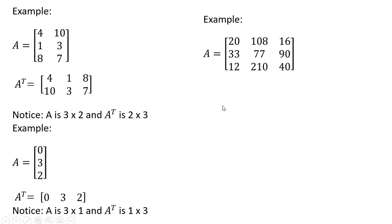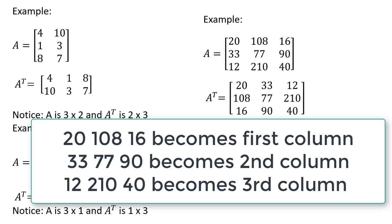Another example. Here we have a 3 by 3 matrix. So since it is a square matrix, when we transpose it, its dimensions won't change. It will still be a 3 by 3 matrix. So here is the transpose.